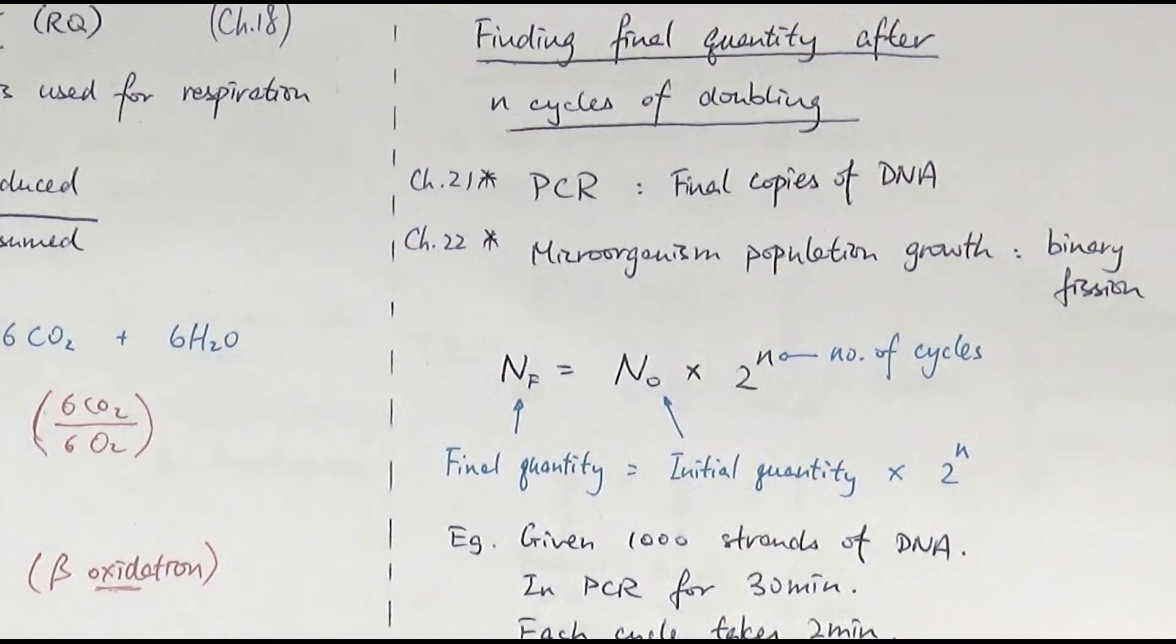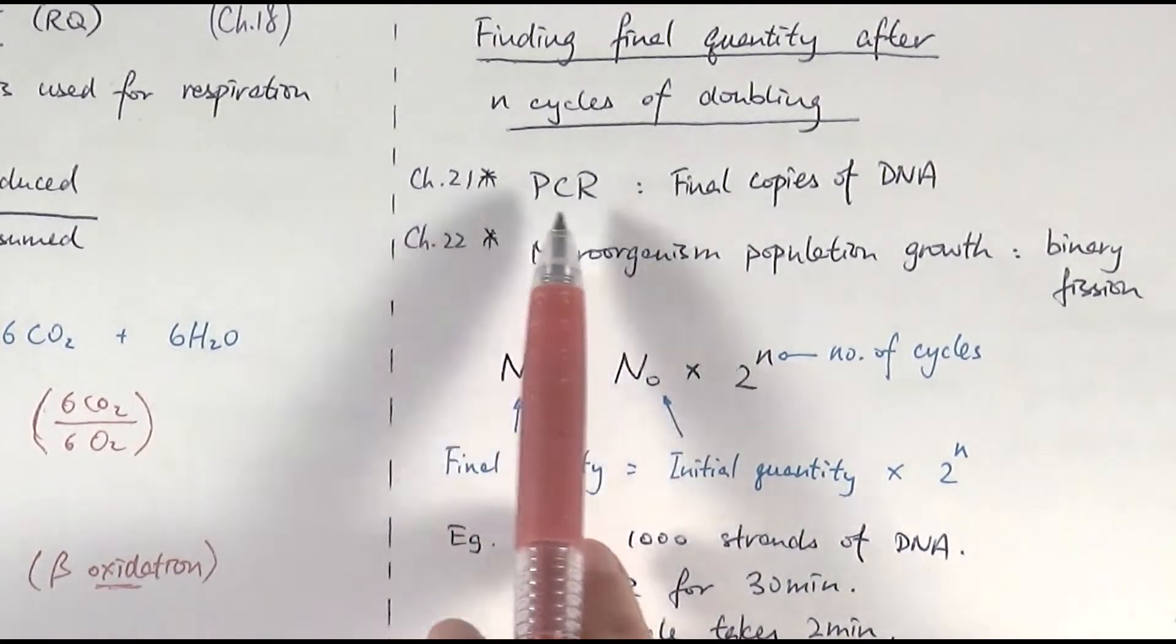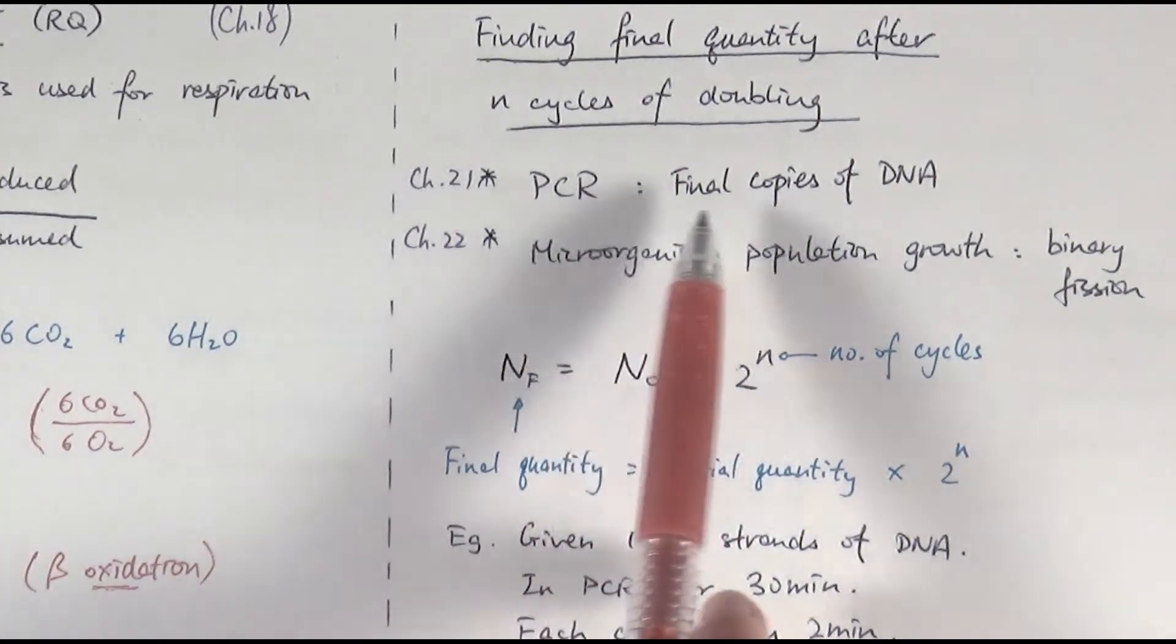The next bit will be about finding the final quantity after n cycles of doubling. So what does that mean? There are only two particular situations we'll look at. Number one is in chapter 21, when we are thinking about PCR, polymerase chain reaction. PCR is an artificial way of replicating your DNA. It's used widely in, for example, forensics, when you collected a small sample of DNA from, let's say blood samples, and you need to amplify that and make more of that DNA in order to do detailed analysis later on. So you're trying to make multiple copies of DNA.